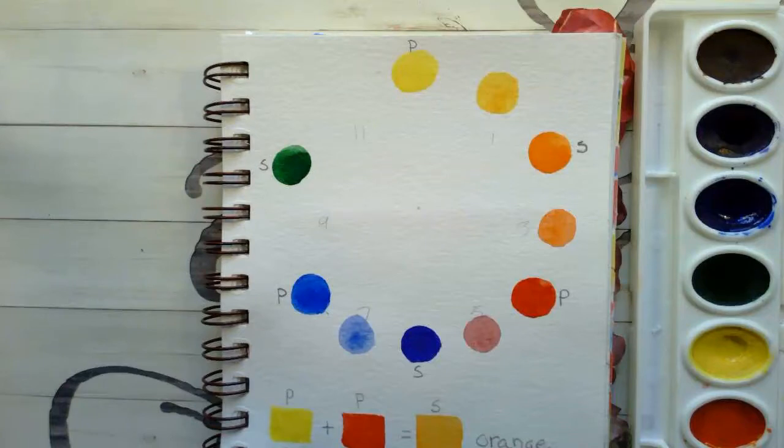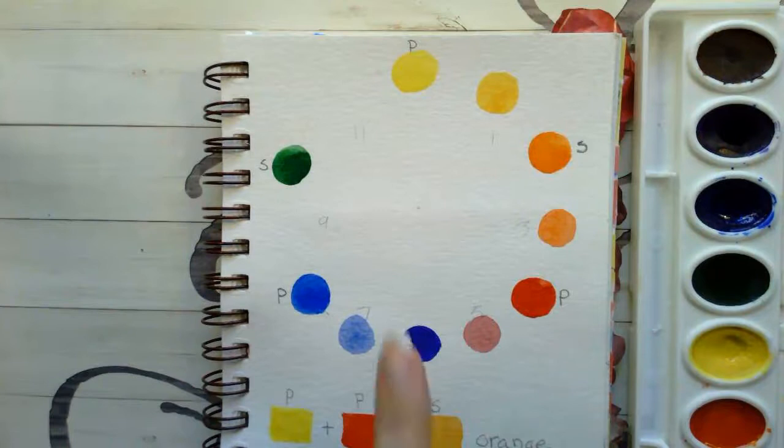So as the colors dry on the page, you'll see them start to appear a little bit more clearly on the screen for you. And you should be noticing this gradual shift in the colors as we move around the color wheel.